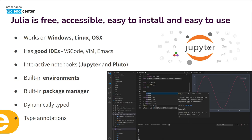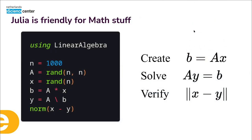Julia has built-in environments similar to virtualenv and a built-in package manager, making it very easy to get packages registered. It is dynamically typed, so you don't have to declare variable types, but it does have type annotations — if you want to constrain the types on a function you can be specific and it respects those types, which is great.